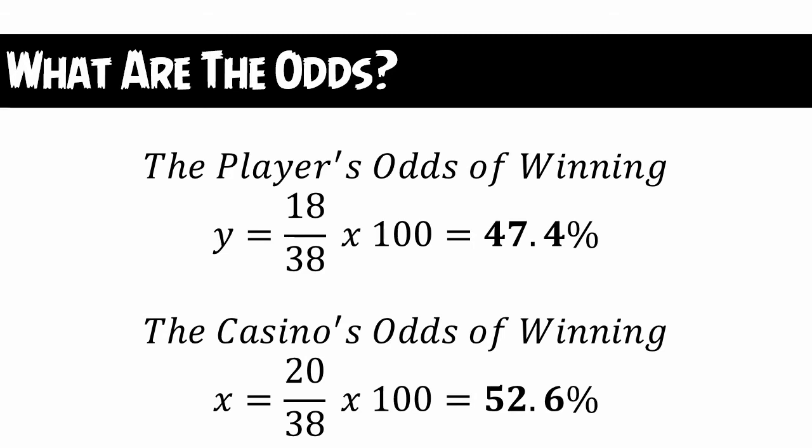This 5.2% edge is what ensures that the casino is always going to end up making money at the cost of the roulette player in the long run. In practical terms, over a large number of bets, the casino will end up making 5.2% of the total money bet on the roulette table.